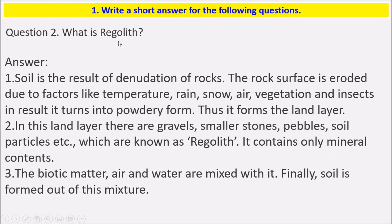What is Regolith? Regolith is the result of denudation of rocks. The rock surface is eroded due to factors like temperature, rain, snow, air, vegetation, and insects. As a result, it turns into powdery form, thus forming land layers. In these land layers there are gravels, smaller stones, pebbles, and soil particles, which are known as Regolith. It contains many minerals, biotic matter, air, and water mixed with it, and finally soil is formed out of this mixture.